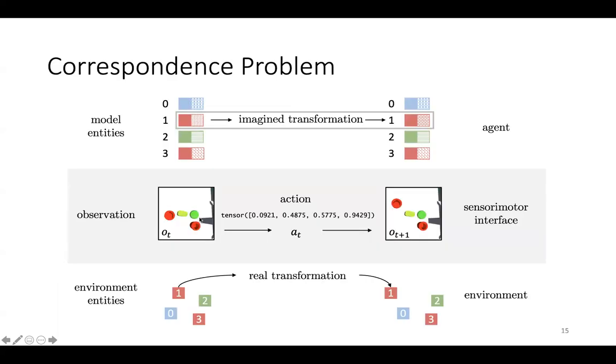The correspondence problem is the problem of constructing representations of entities such that there is a correspondence between transforming the agent's internal representation of an object and acting on the object in the real world. This is challenging because this requires inferring such representations from the sensorimotor interface without supervision on what the entity representations should correspond to.